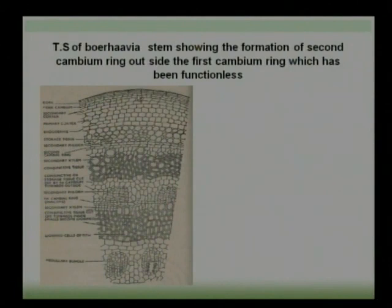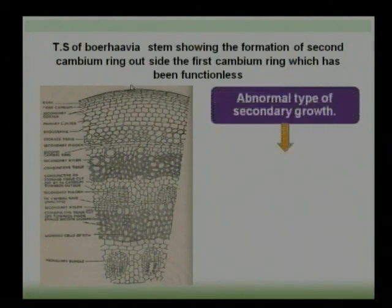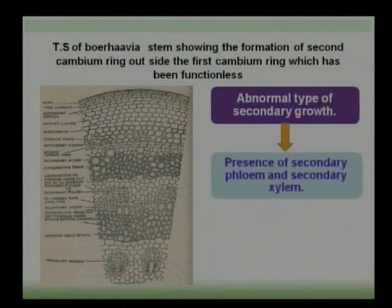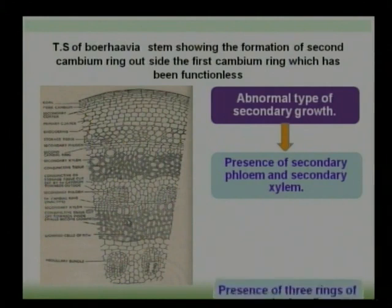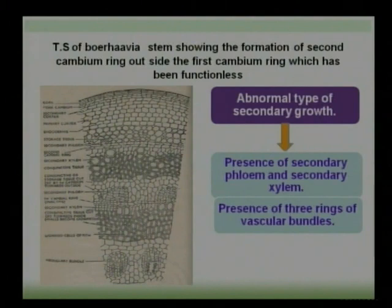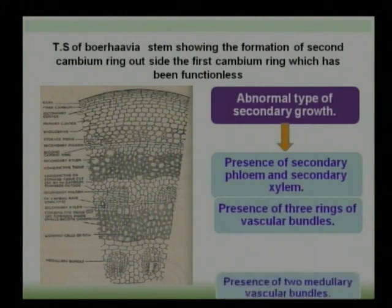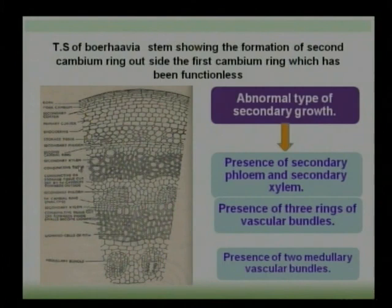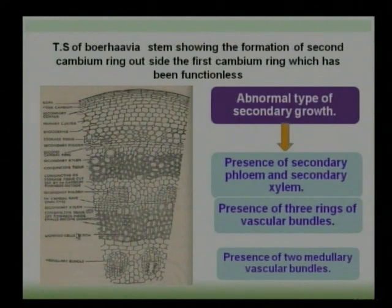Abnormal secondary growth has three main points: first, the presence of secondary phloem and secondary xylem; second, the presence of three rings of vascular bundles — outer, middle, and inner; and third, the presence of two medullary vascular bundles. Among the three rings, the middle ring and the inner ring are known as medullary bundles because they are present inside the pith region.